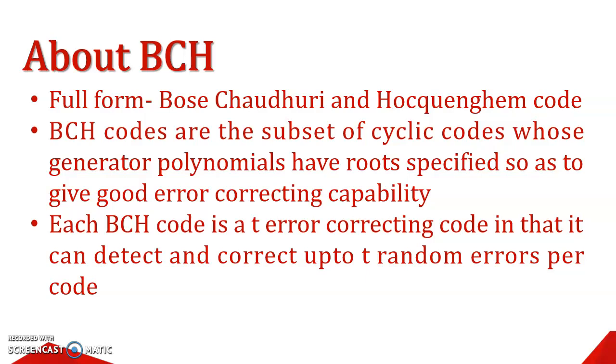Before telling the parameters or properties of BCH Code, we should remember the following important point: Each BCH Code is a t-error correcting code in that it can detect and correct up to t random errors per code.